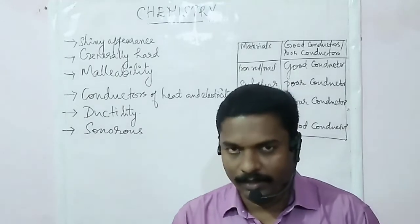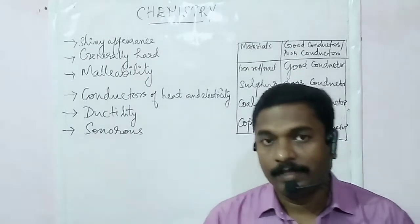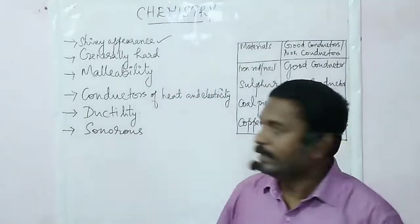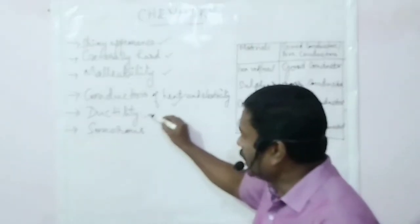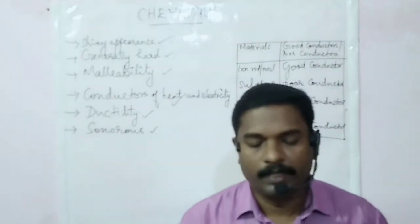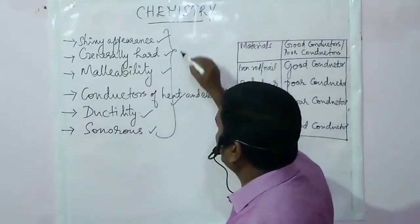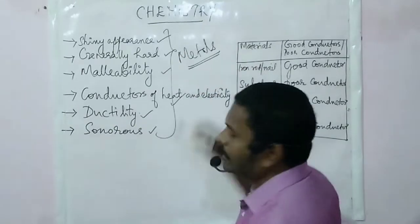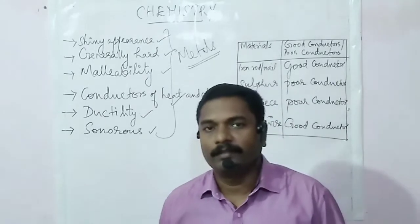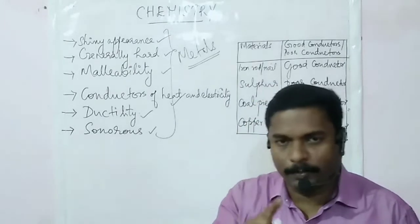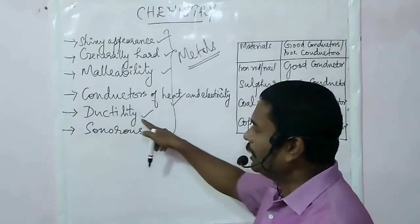After performing these activities we can say that some materials are shiny, hard, malleable, conductors of heat and electricity, ductile, and sonorous — these are metals. So materials possessing these characteristic properties are called metals. We can classify materials as metals according to their physical properties. The physical properties of metals are: lustrous, hard, malleable, conductors of heat and electricity, ductile, and sonorous.